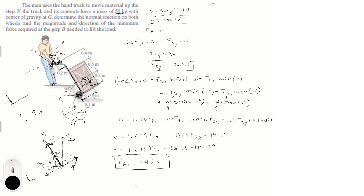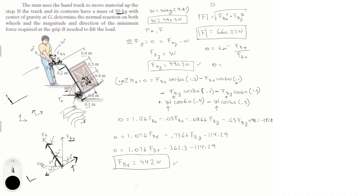Now that we have F_Bx and F_By, we can find the magnitude of F, given by the square root of F_Bx squared plus F_By squared. The magnitude of F equals 660.27 Newtons. The angle is equal to the inverse tangent of F_By over F_Bx, which equals 47.98 degrees.